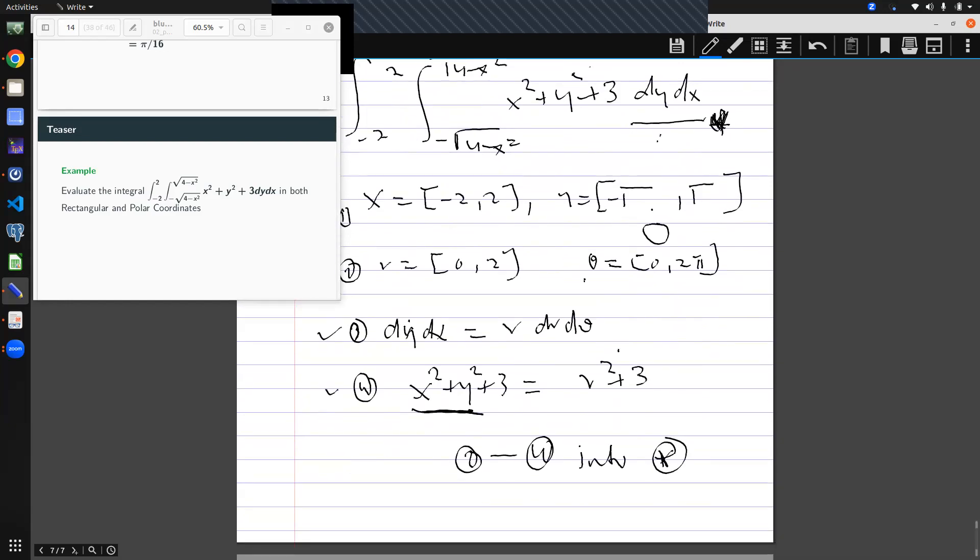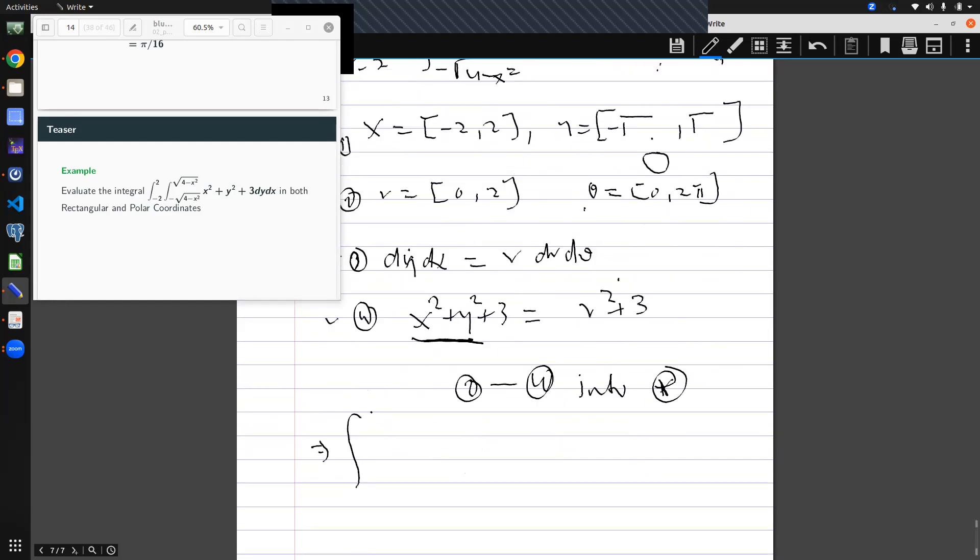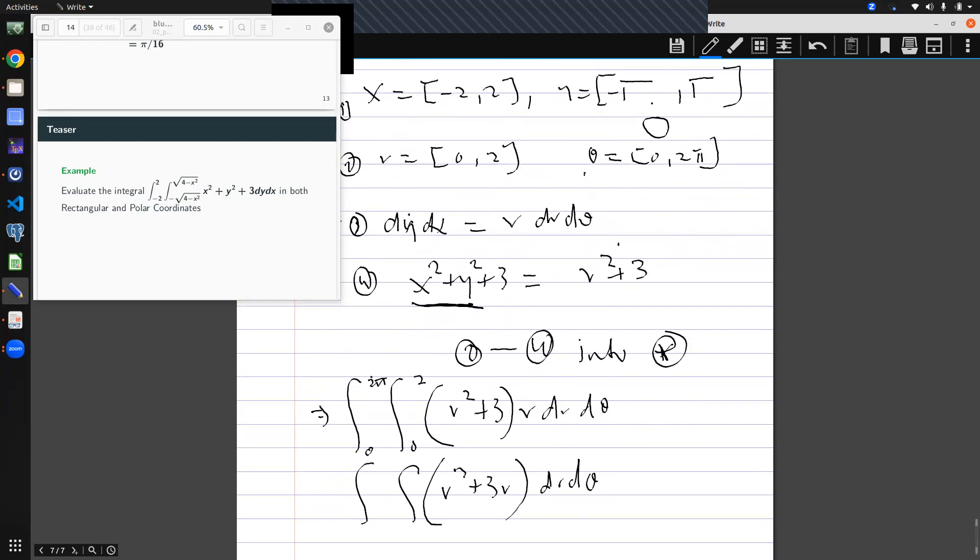And so this simply becomes zero to two pi, zero to two, r squared plus three, r dr d theta. And hence I get r to the power three plus three r dr d theta. I have simplified my question. It looks so scary at first to compute, but with the help of a polar or knowing that my region is a circle, I'm able to convert it to a polar coordinate. And so that brings us to the end of the case too.